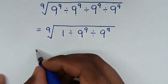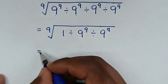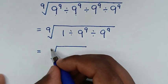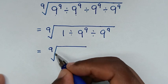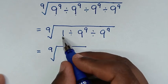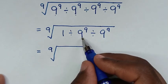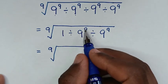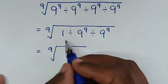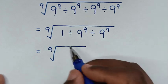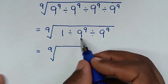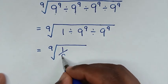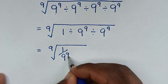Then in the next step, it will be equal to the 9th root of 1 divided by 9 power of 9. We start to deal from here, this first operation from left to right. 1 divided by 9 power of 9 is the same as 1 over 9 power of 9.